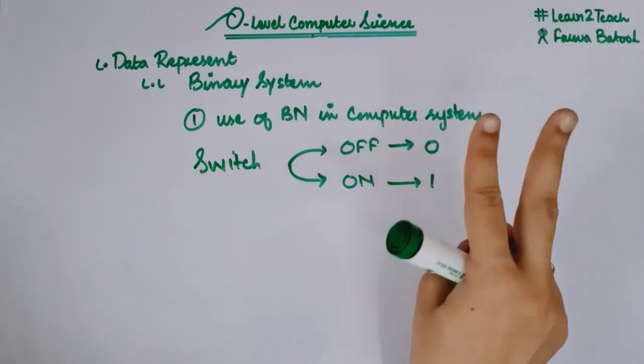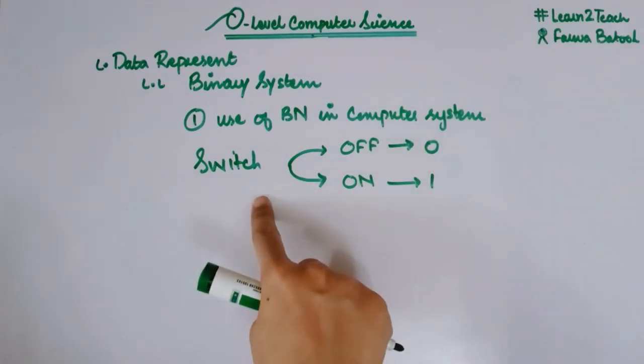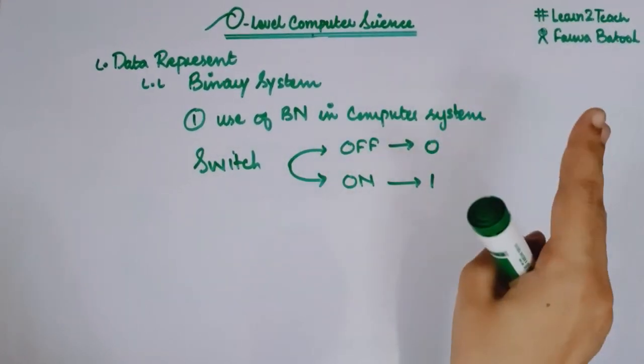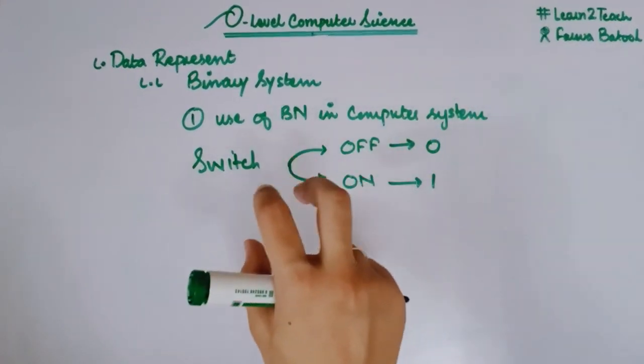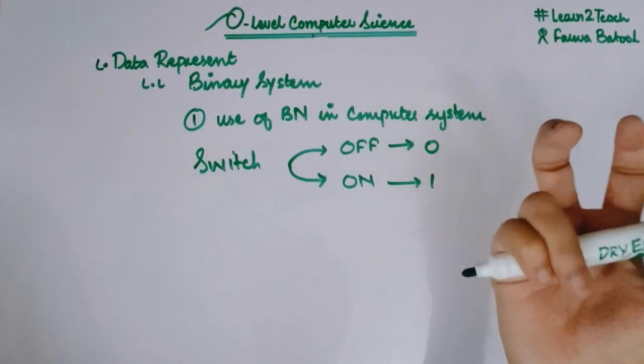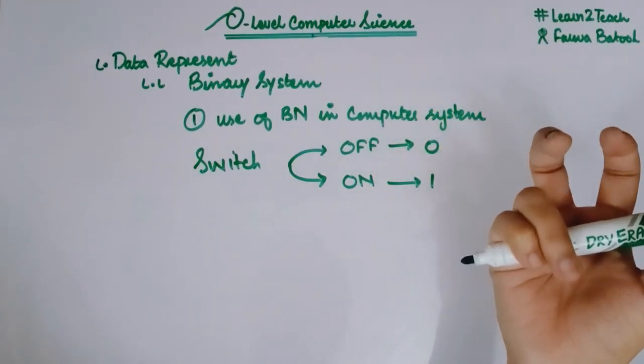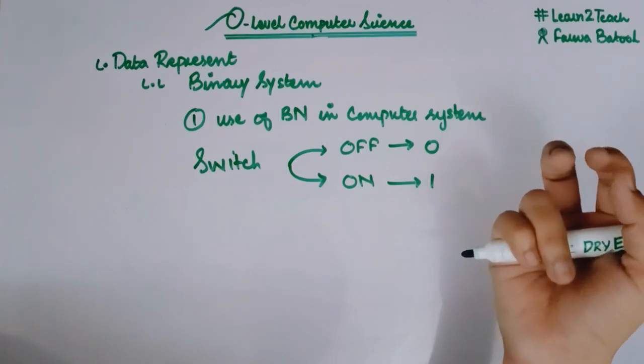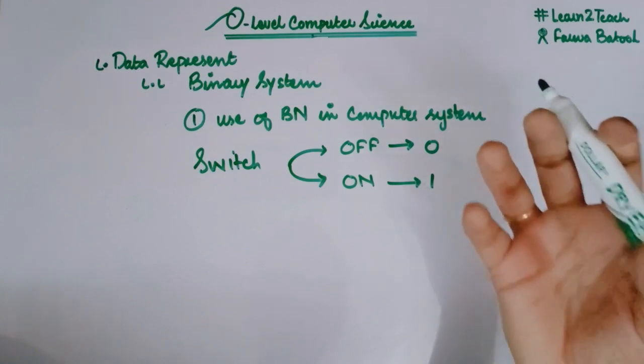The important thing here is that because of these two states, these only two states of a switch, we only need two digits—either zero or one—in order to transmit that signal or to store that particular data into the memory.